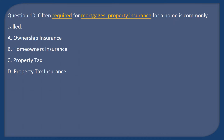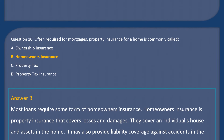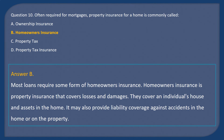Question 10: Often required for a mortgage, property insurance for a home is commonly called: A. Ownership insurance. B. Homeowner's insurance. C. Property tax. D. Property tax insurance. Answer: B. Most loans require some form of homeowner's insurance. Homeowner's insurance is property insurance that covers losses and damages to an individual's house and assets in the home. It may also provide liability coverage against accidents in the home or on the property.